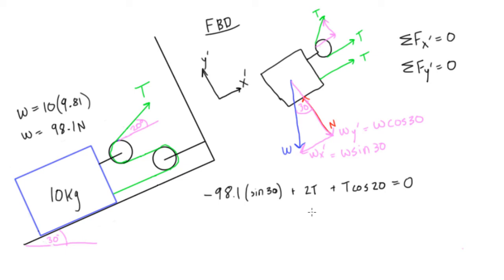So we'll have, let's do it this way, we'll have t times 2 plus cos 20 is going to be equal to 49.05, that's just 98.1 times sine 30. So we'll bring this along to the other side.